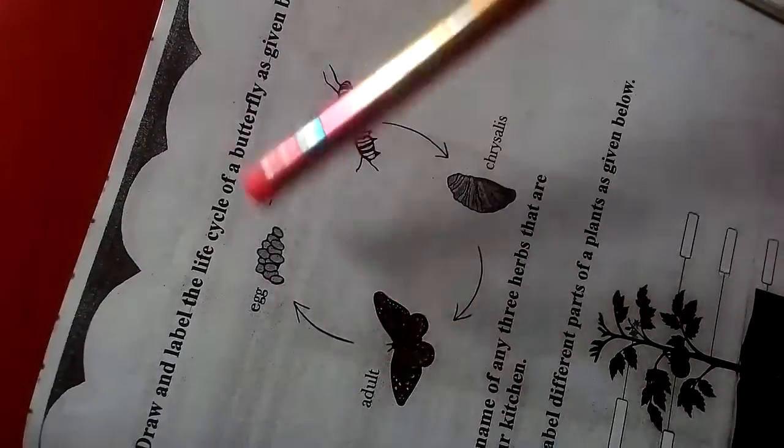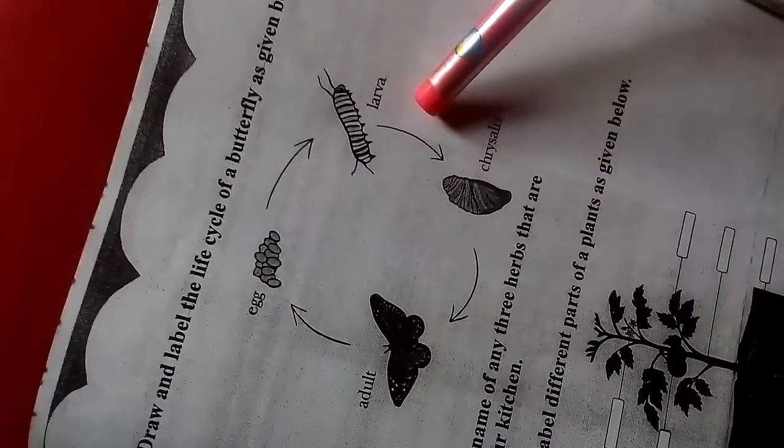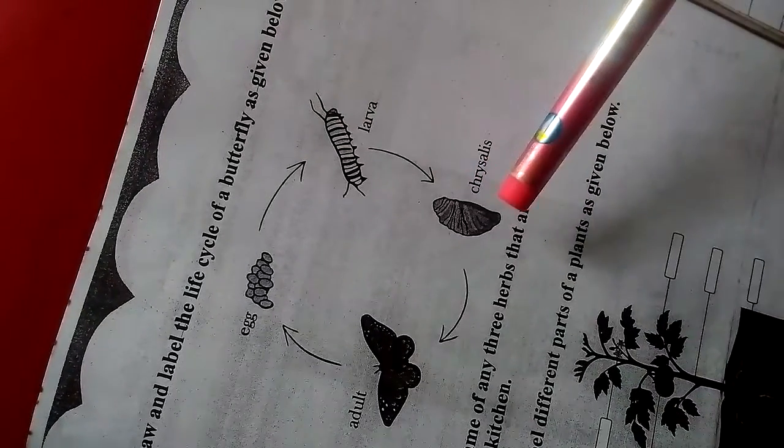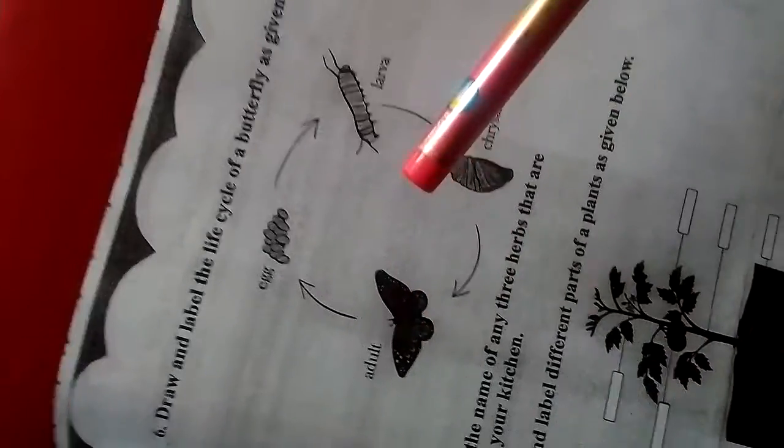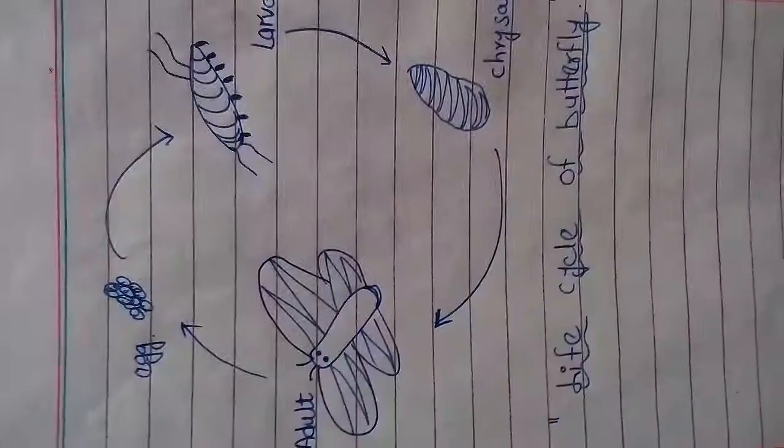Here is the life cycle of a butterfly which starts from the adult butterfly which lays eggs. From the eggs they become larva, and from the larva there is the formation of chrysalis. This chrysalis changes into the adult butterfly. So students, now I am going to show you how you can make this life cycle like this.